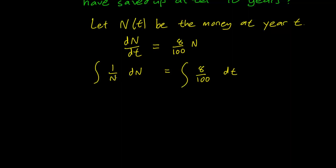On the left hand side, 1 over N dN is just going to be the natural log of N. On the right hand side, we are integrating a constant 8 over 100 in terms of T, which is 8 over 100 T, and we add a plus C here.